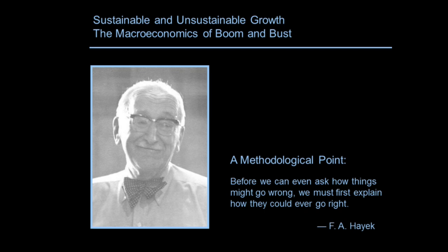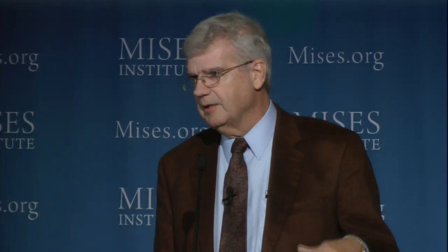I want to add one methodological point that is critical to understanding the difference between the Austrians and Keynes, or the Austrians and most other business cycle theories, including Milton Friedman's theories about cyclical movements. I'm paraphrasing Hayek: before we can even ask how things might go wrong, we must first explain how they could ever go right. The Austrians are unique in that respect when it comes to business cycle theory. Keynes didn't raise the issue at all about how things could go right, because he thought they couldn't — that there's nothing in the nature of a market system that would cause things to go right, and that's why they always go wrong.